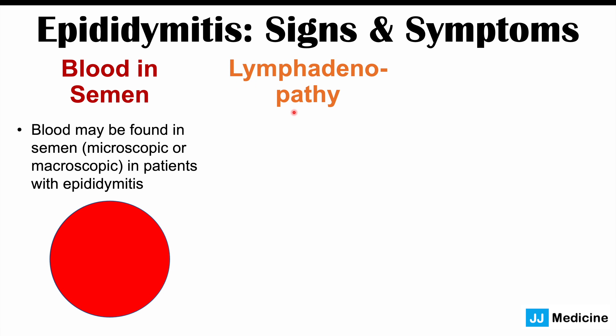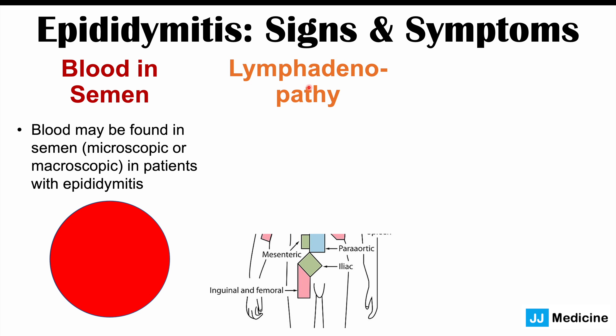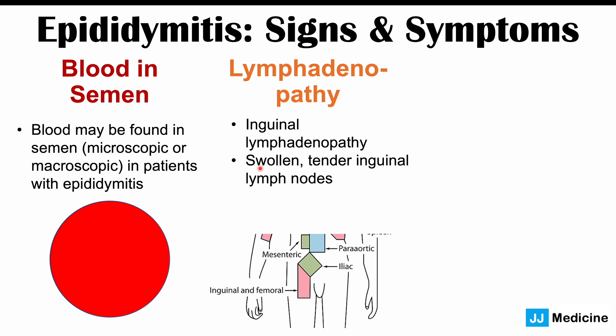We can also see lymphadenopathy in epididymitis — more specifically, inguinal lymphadenopathy. As shown in the image, the inguinal lymph nodes are located in the groin area and can become swollen and tender to touch. This occurs because the inflamed or infected epididymis drains to these inguinal lymph nodes, leading to swollen, tender nodes.